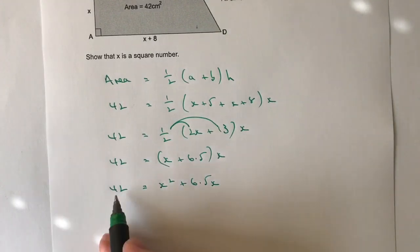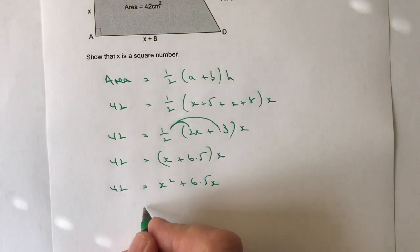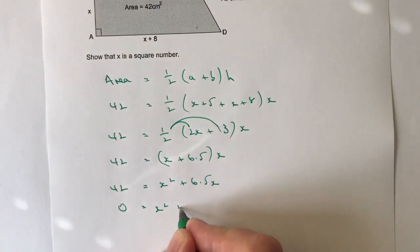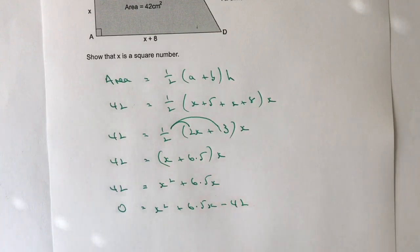So the first thing I'm going to do is bring this 42 over to the other side. And I'm going to get 0 equals x squared plus 6.5x minus 42.